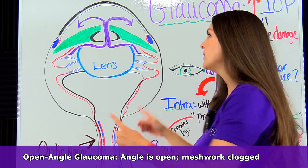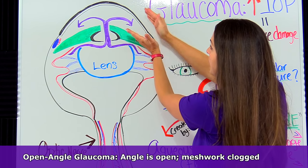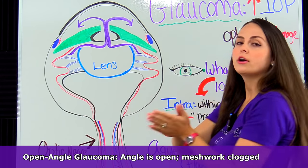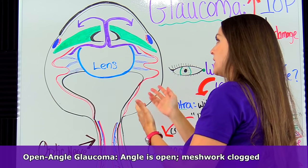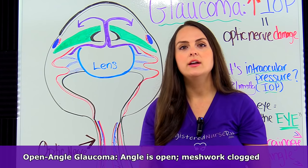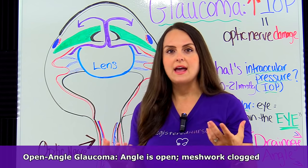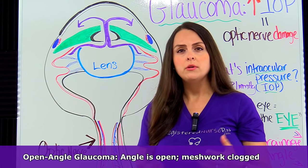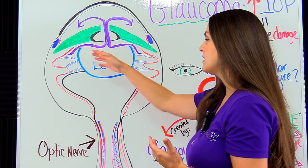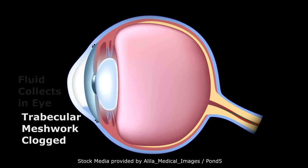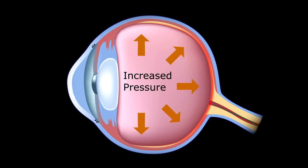Now let's talk about when aqueous humor doesn't flow well through the eye, leading to increased intraocular pressure and damage to the optic nerve. With open angle glaucoma, the drainage angle — formed between the cornea and the iris — is open, so aqueous humor can flow down to the trabecular meshwork. But the problem is with the trabecular meshwork itself. As we age, this meshwork becomes less flexible, less permeable, and thicker, so it becomes clogged. The aqueous humor cannot get through, pressure increases, fluid collects in the eye, and this increased pressure puts pressure on the optic nerve causing vision damage.